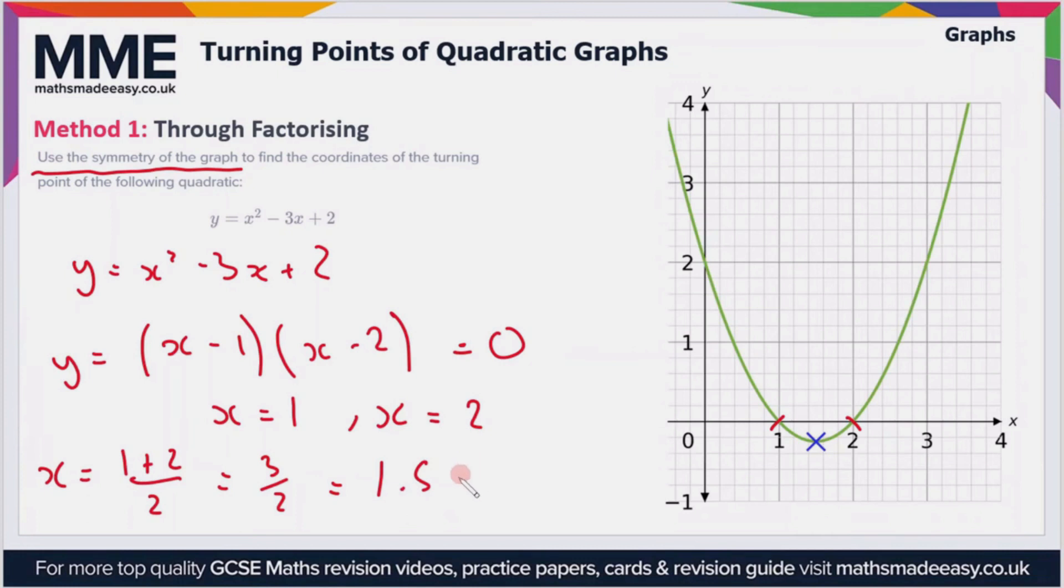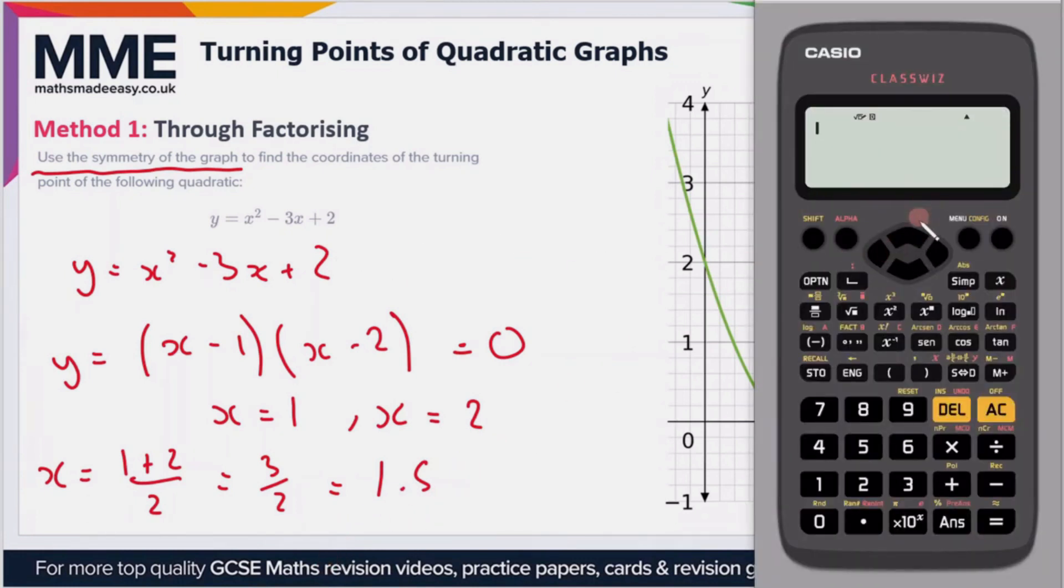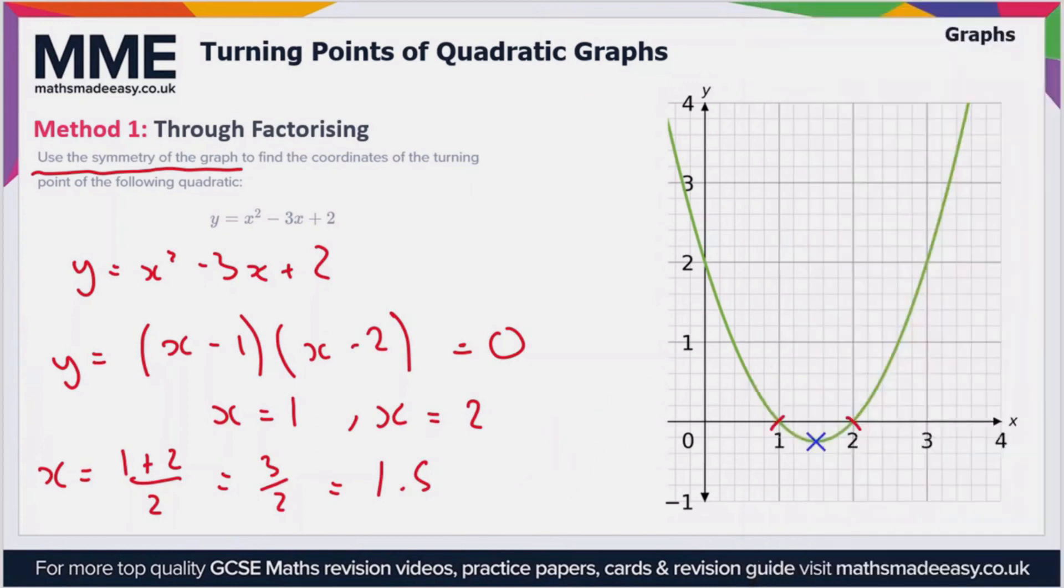So we have the expression x squared minus 3x plus 2. If x is 1.5, then we can do 1.5 squared minus 3 times 1.5 plus 2. That gives us a y value of minus a quarter or minus 0.25. So our coordinates then are 1.5, minus 0.25.